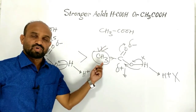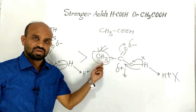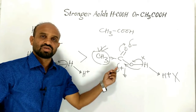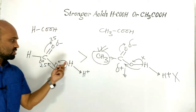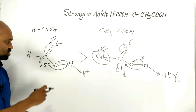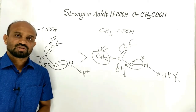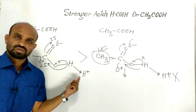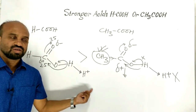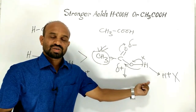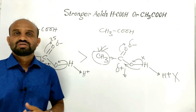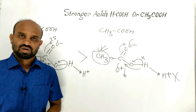The methyl group (alkyl group) exerts a positive inductive effect, decreasing the positive charge on the carbonyl carbon of acetic acid. In formic acid, no such electron-donating group is present, so the positive charge remains high, and proton is freed easily. In acetic acid, the positive inductive effect reduces this charge, so proton release is not as easy. That is why formic acid is a stronger acid than acetic acid.